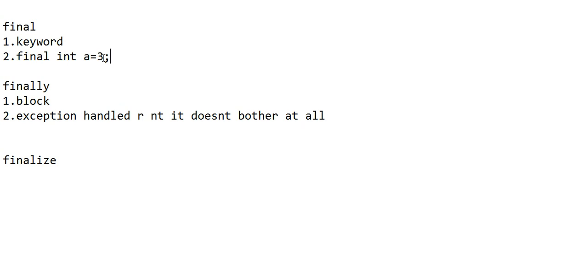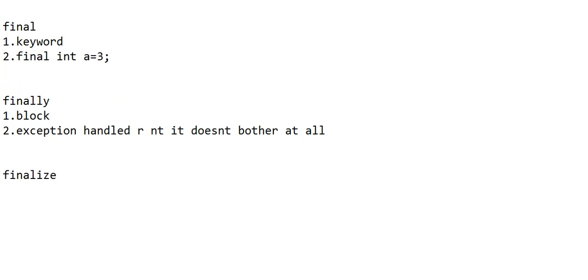You can also use final with classes. If you do not want a specific class to be inherited further, you declare it as final. For example, final class Apple — you cannot extend this Apple class because it is declared as final. You cannot derive another class from Apple class. That is what final does.